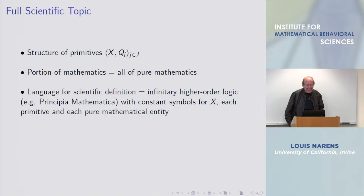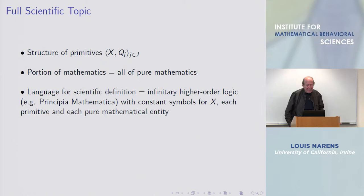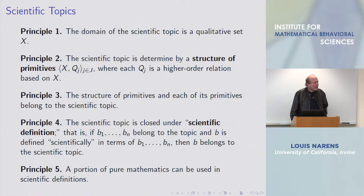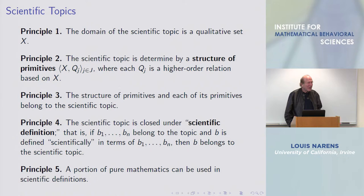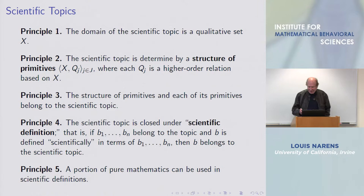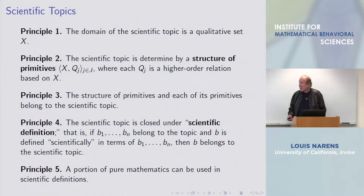The fifth principle is that a portion of pure mathematics can be used in scientific definitions. After all, we use mathematics in science—we can use the number two or pi in a definition, because we do that all the time. The number two could be a type of symmetry, a ratio of two physical measurements where the scale cancels out. For this conference, it all has to do with symmetries. In principle, we can use a portion of pure mathematics, and this is what science does.